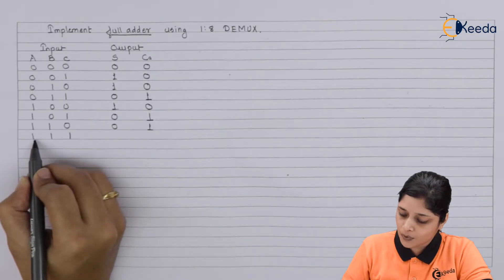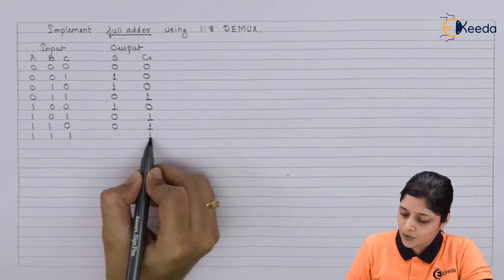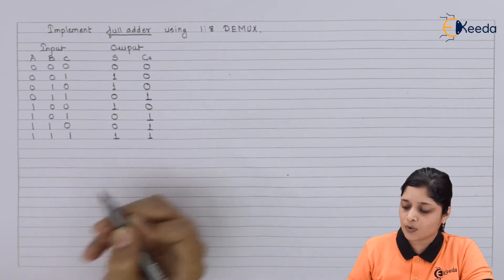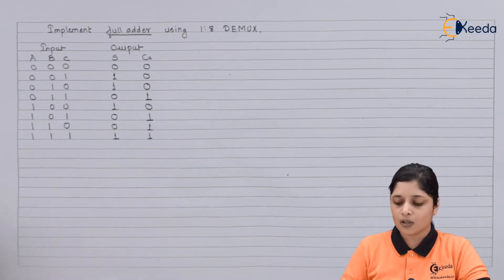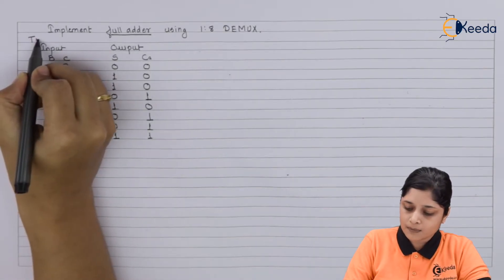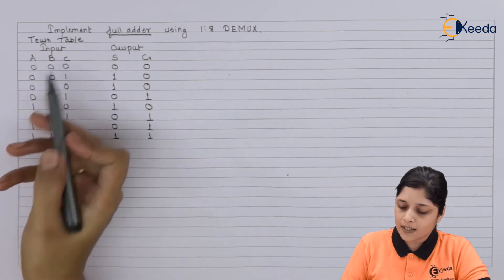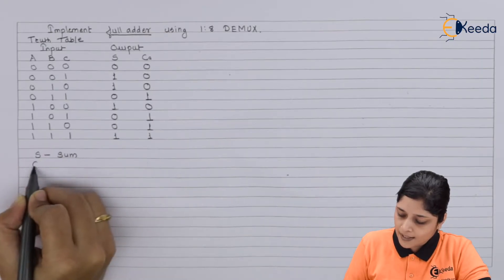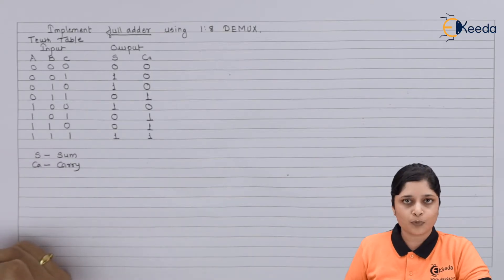Now here if you are going to focus, 1 plus 1 is 0, carry 1, and 0 plus 1 is 1. So last term is 1, 1. So this is all about the truth table, where A, B and C are the inputs, S is the sum and CA is the carry. These two are the outputs.